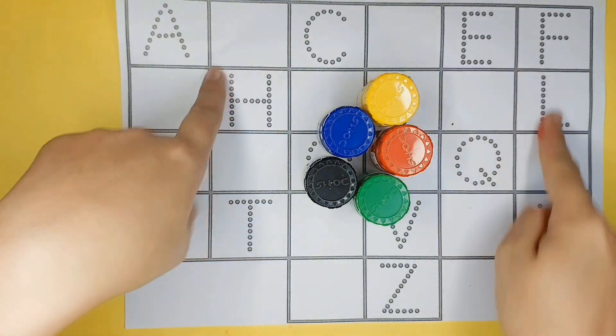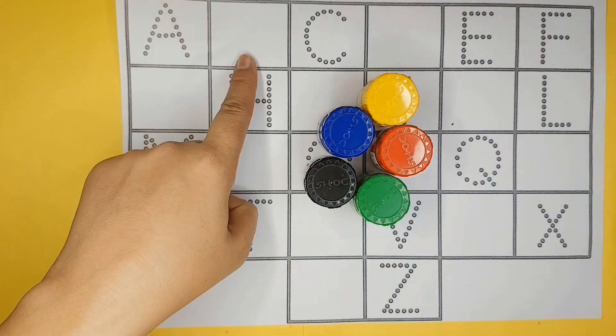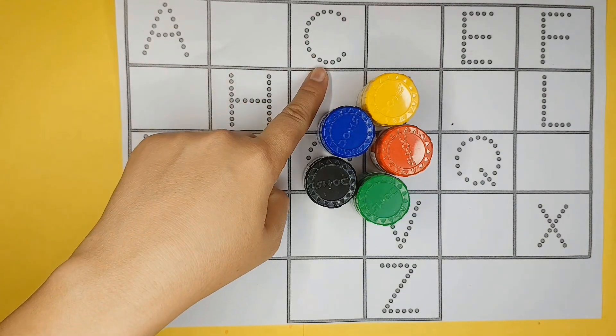Today we will try to learn alphabets. A for aeroplane, B for ball, C for car.